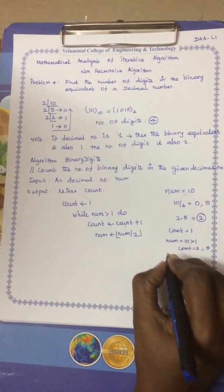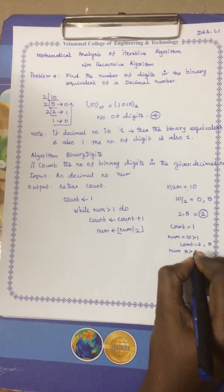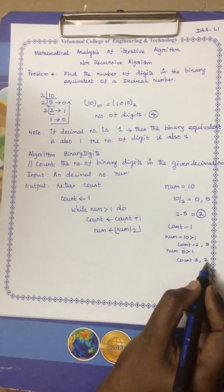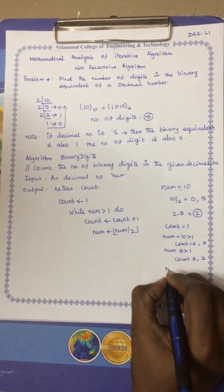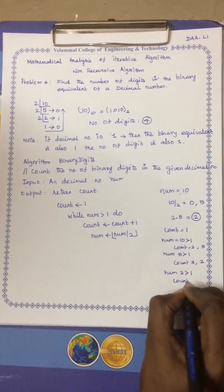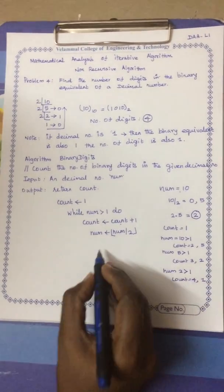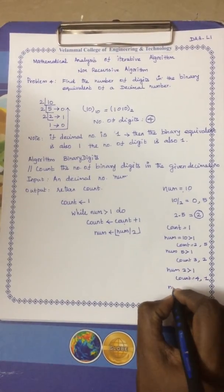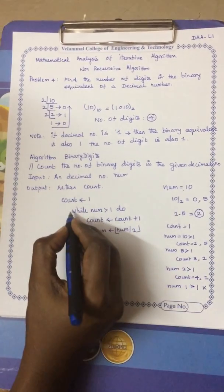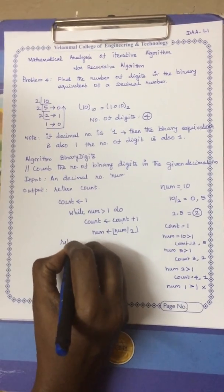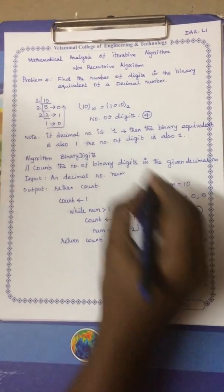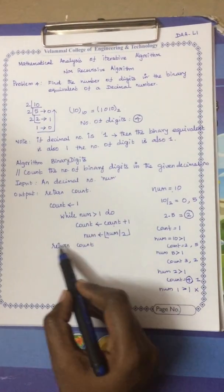Once again it enters the while loop — 5 is checked against 1. Count is incremented to 3 and after division NUM becomes 2. The while loop runs again with NUM = 2, which is greater than 1, so count is incremented to 4 and NUM becomes 1. Now NUM is 1, the condition '1 > 1' fails, so it exits the while loop and returns the count. The count is 4, which matches our example result.